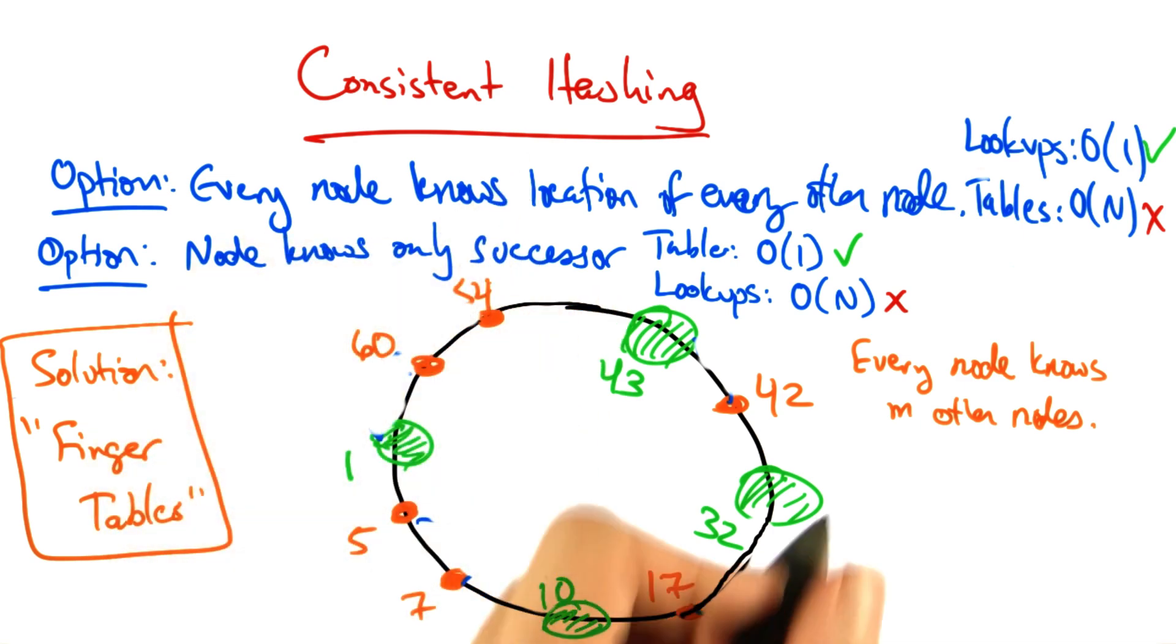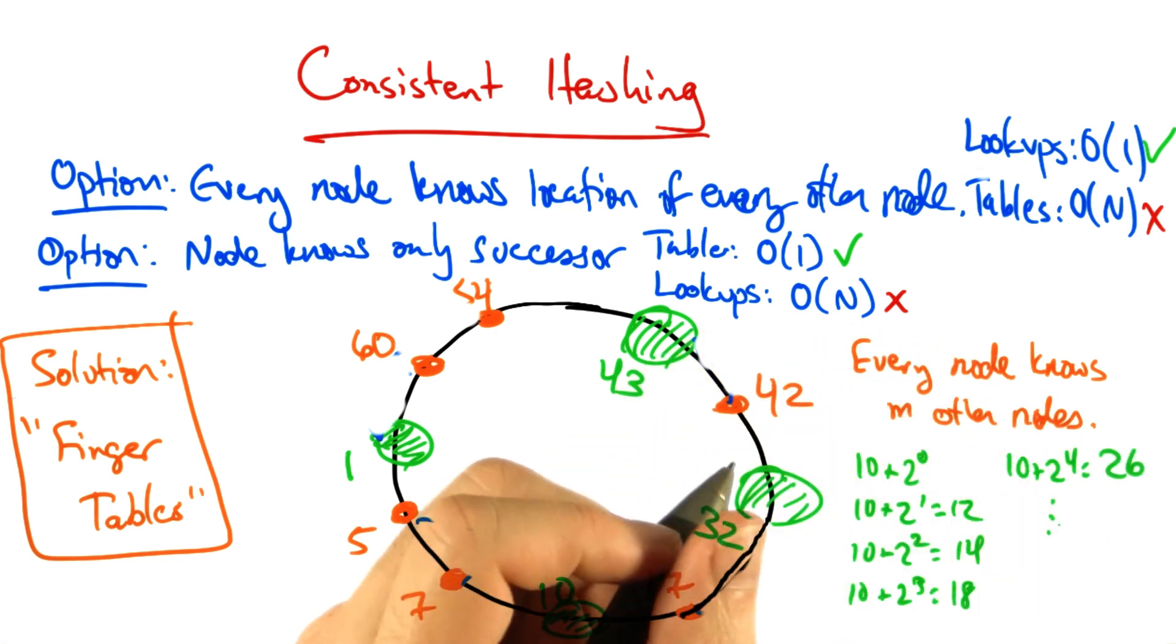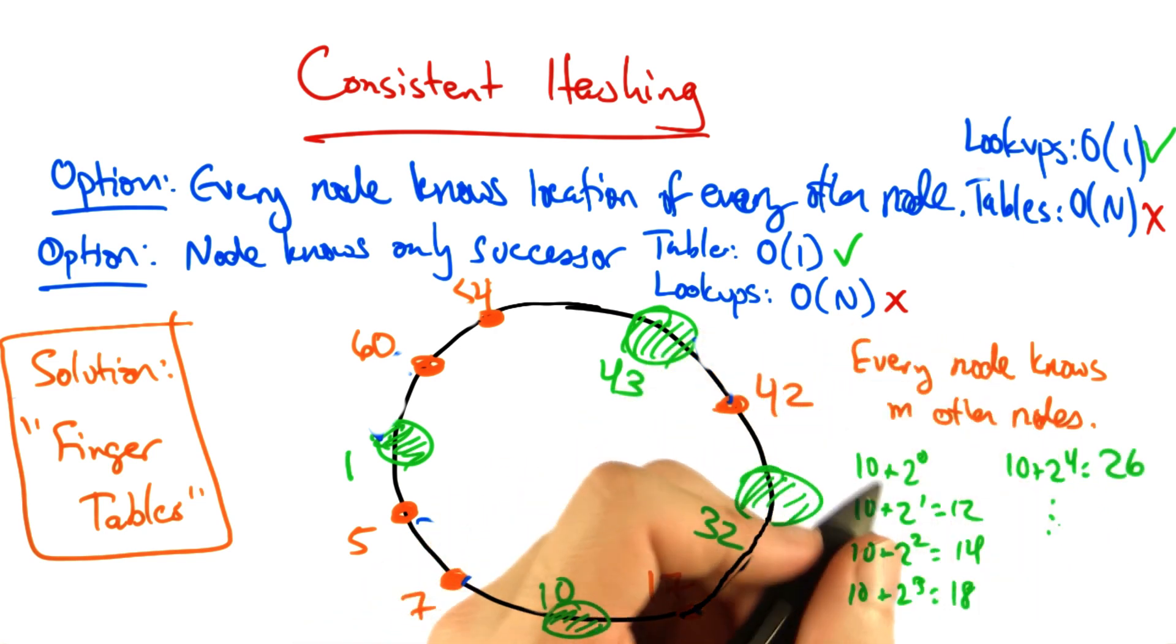So for example, node 10 would maintain mappings for 10 plus 2 to the 0, 10 plus 2 to the 1, and so forth.